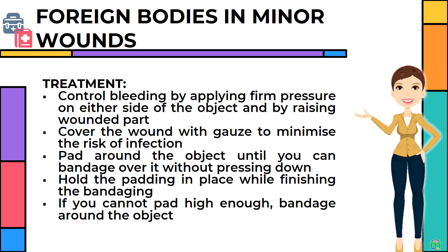Foreign bodies in minor wounds can be treated by the following measures: control bleeding by applying firm pressure on either side of the object and by raising the wounded part; cover the wound with gauze to minimize the risk of infection; pad around the object until you can bandage over it without pressing down; hold the padding in place while finishing the bandaging. If you cannot pad high enough, bandage around the object.